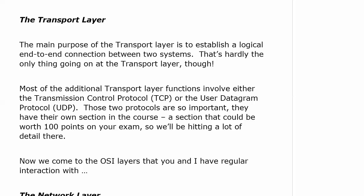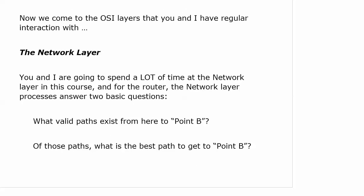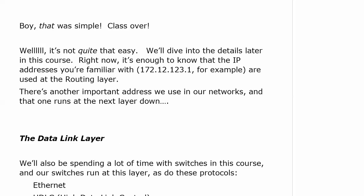Going back to the overall OSI model, those top four layers — you and I in our everyday job as network admins could go weeks, months, years without even thinking about them. Most of what we do on the job is at the bottom three layers, and especially the network layer. We're going to spend a lot of time at the network layer doing Cisco router labs. The network layer processes answer two basic questions: what valid paths exist from here to a destination, and of those paths, which one is the best? It's not quite that easy — it's going to be more complicated on your exam, and even more complicated in the real world.